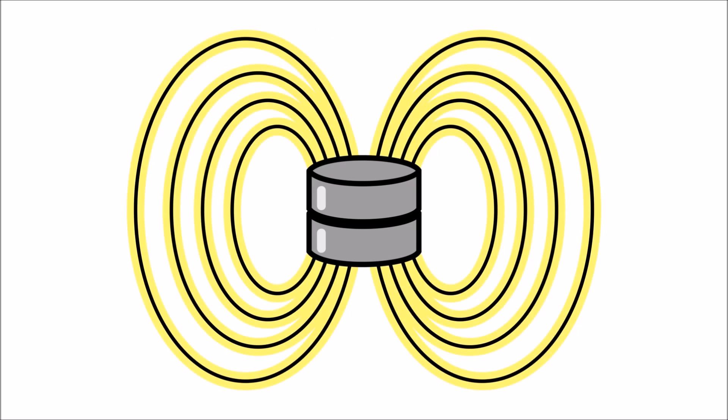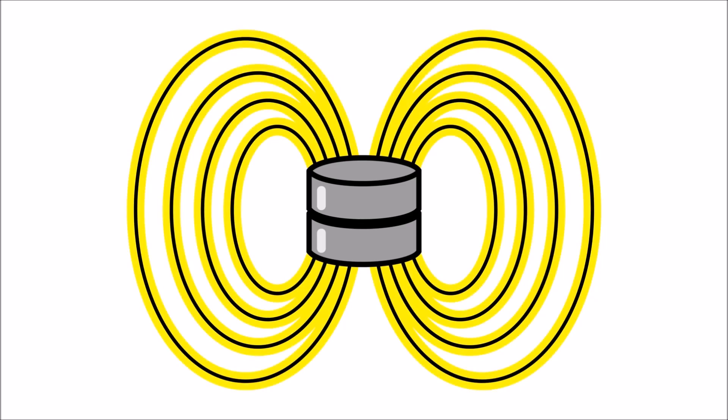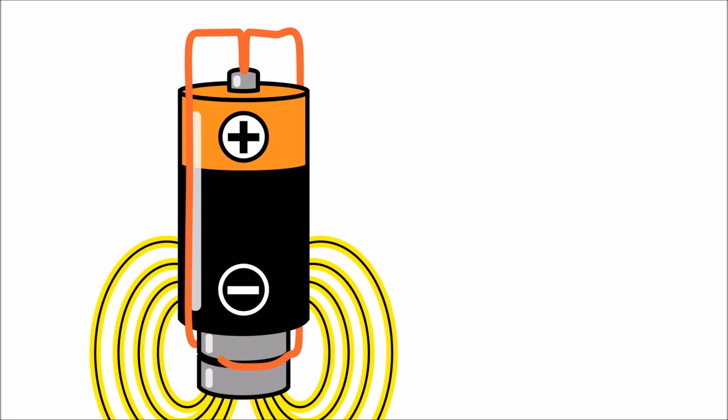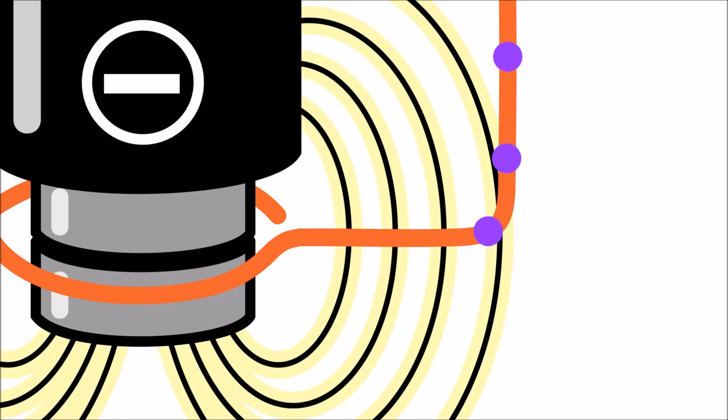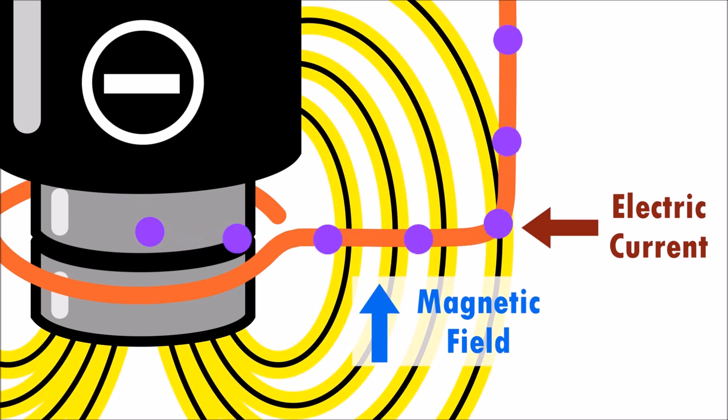Magnets emit an invisible force called a magnetic field. The wire spins because of a concept called the Lorentz force. When the electric current moves through the magnetic field, it creates a force, which causes the wire to spin!